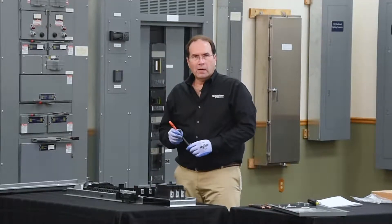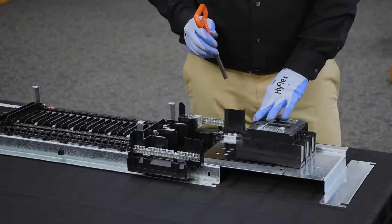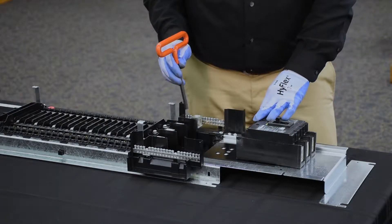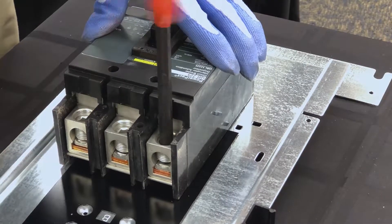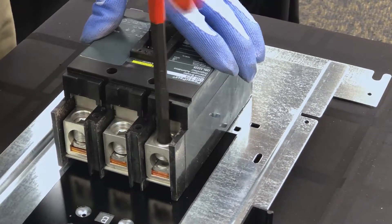Next, we're going to back off the wire binding screws on the three lugs of the breaker and the three lugs of the panel. I'm preparing the load end of the breaker to install the cables.